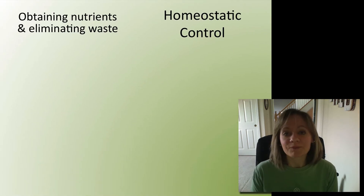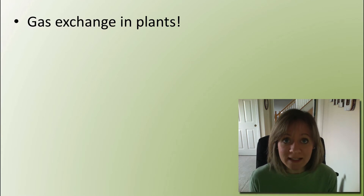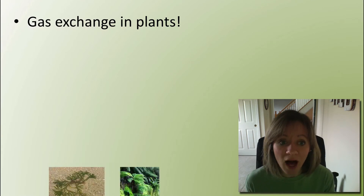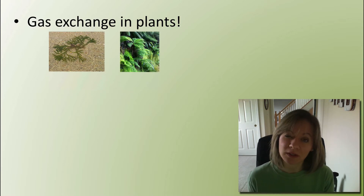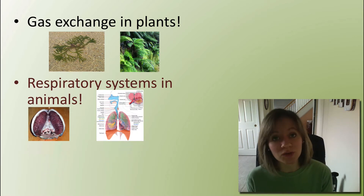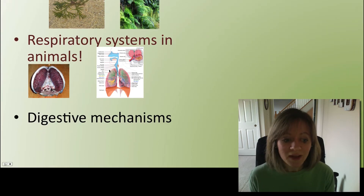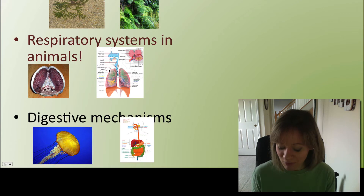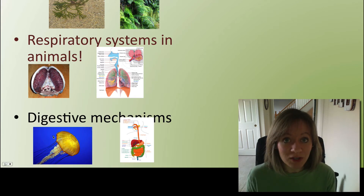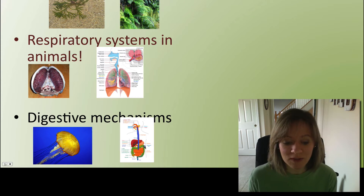I'm going to give you six examples and then we'll look closely at two of them. Under obtaining nutrients and eliminating waste: plants need carbon dioxide from their environment and need to expel oxygen — terrestrial and aquatic plants both do this, but a little differently. For respiratory systems, an aquatic animal like a fish differs from a terrestrial animal like a human, so we'll take a closer look at how gills function versus the human lung. For digestive mechanisms, this very simple jellyfish — also known as a hydra — has a single gastrovascular cavity, and we have evolved from that, developing a much more complex system with different types of intestines and stomach.